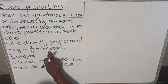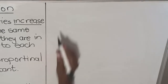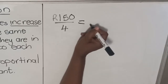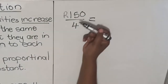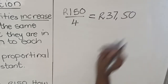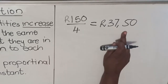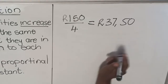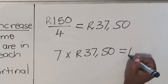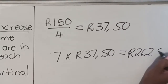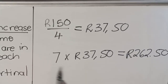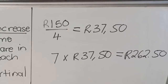After figuring out that it's direct proportion, you find the constant in that ratio. So you take 150 divided by 4, and you get the constant: 37 rand 50 cents. So one book will cost you 37 rand 50 cents. How much will seven books cost? It will be seven times 37 rand 50 cents, so seven books will cost you 262 rand 50 cents.